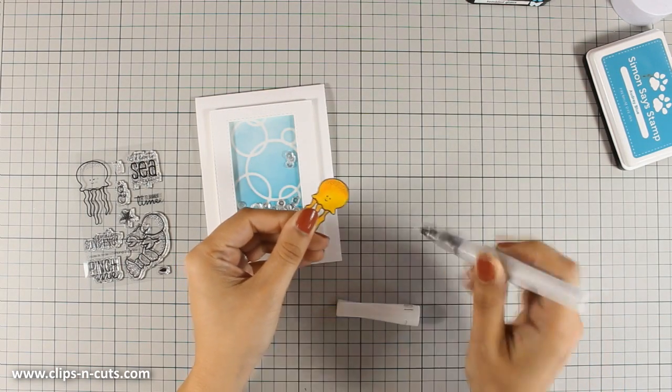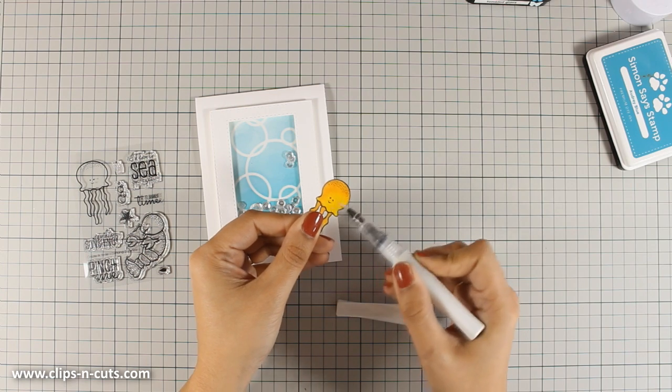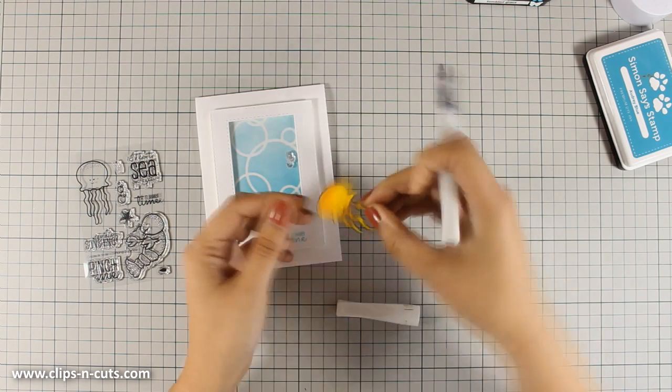And just because I cannot stay away from my clear Wink of Stella glitter pen, I just had to go all over the jellyfish and add some shimmer.